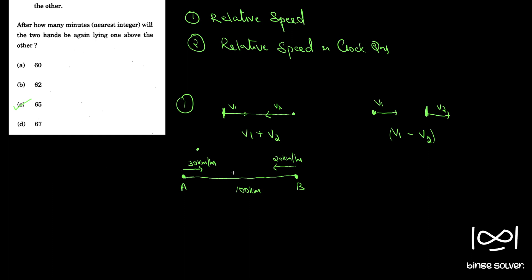If we are not using relative speed, we would say they meet at some point. If it takes T hours, then A traveled 30T kilometers and B traveled 20T kilometers. If we add these two, we get 100 kilometers — so 30T plus 20T equals 100 — and we solve for T. That is the usual method.